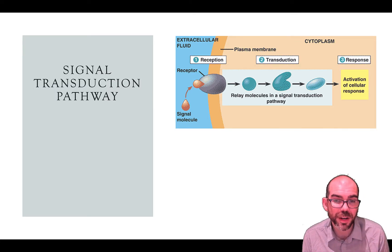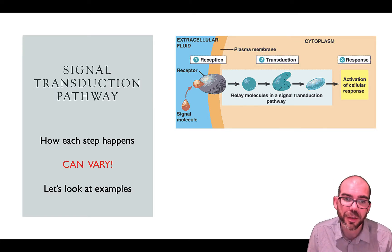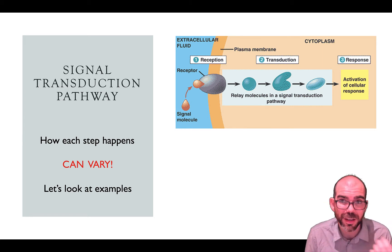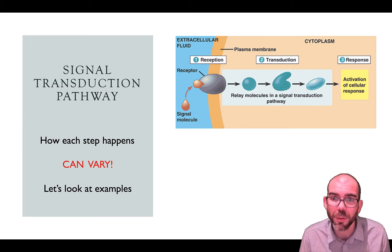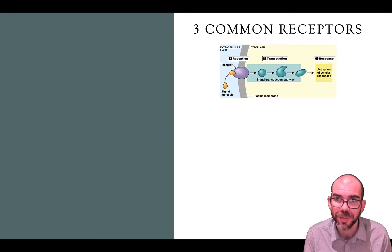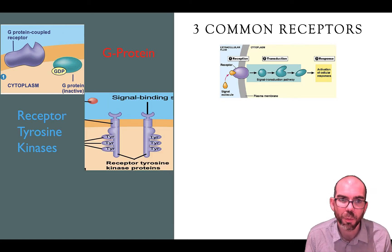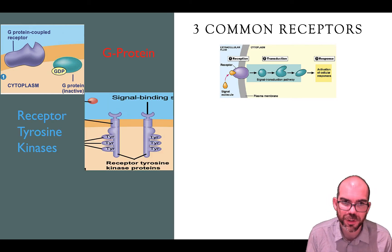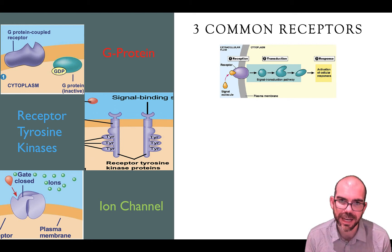Signal transduction pathways — this is a simplified model. There are actually a lot of different ways we can receive, transduce, and respond. So I want to go through a couple examples of each. There are three common receptors we want to know about: one's called the G protein, one's called a receptor tyrosine kinase, and the other is an ion channel. Let's look at all three in detail.